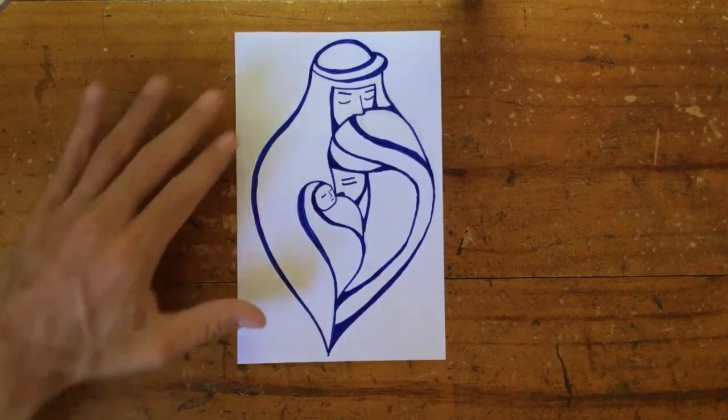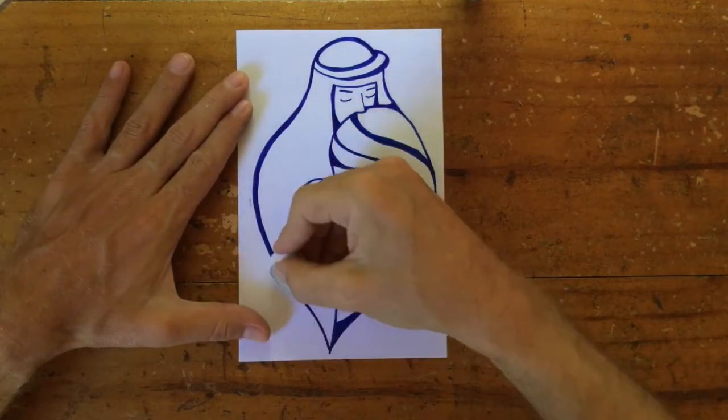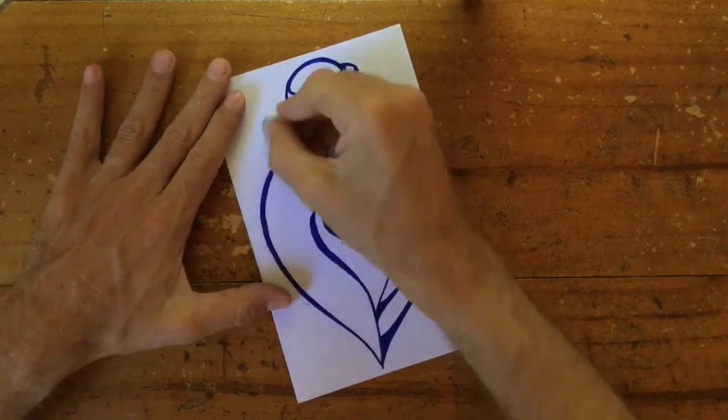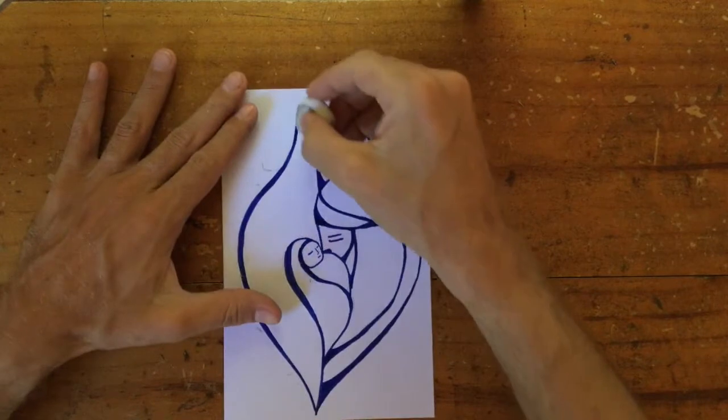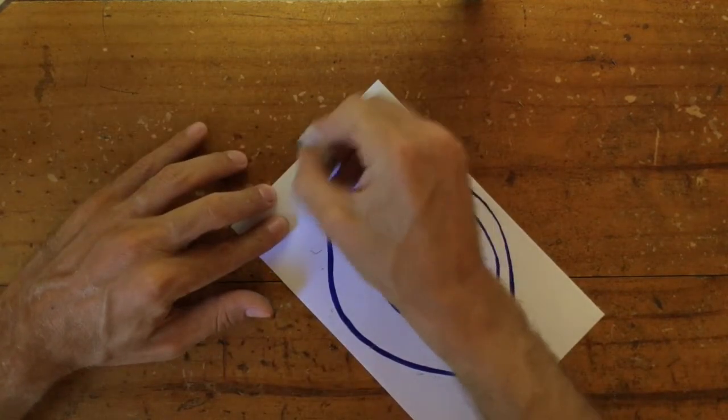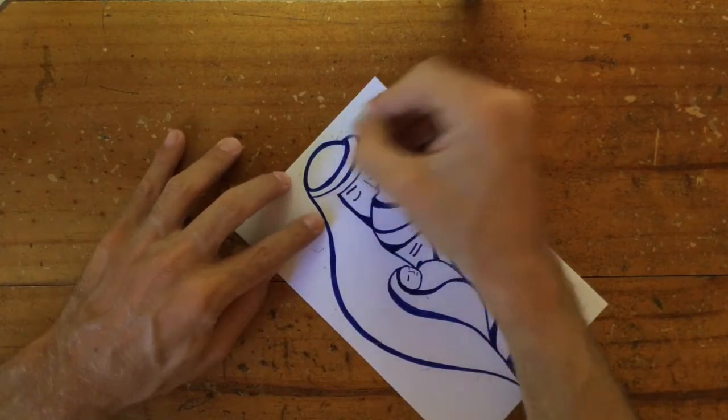So we're going to very carefully erase those pencil lines that we don't need anymore. Do make sure that you've waited long enough for the marker to dry completely. If it's still wet, it can smudge.